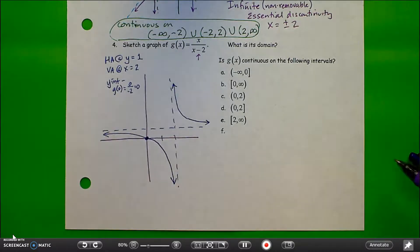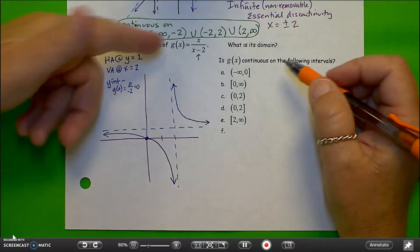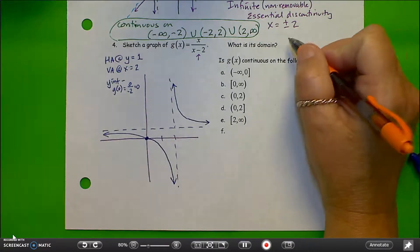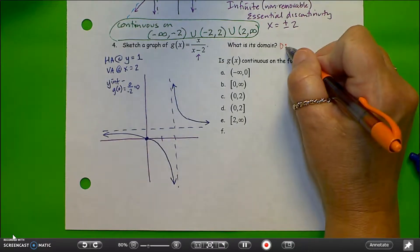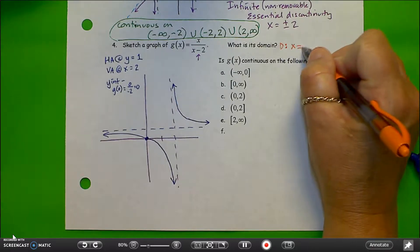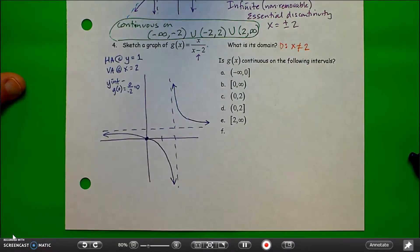Let's answer the questions about this graph. We're interested in domain and continuity. The first question is: what is the domain? This graph works for every value except x equals 2, so our domain is x not equal to 2. We have a discontinuity at x equals 2.